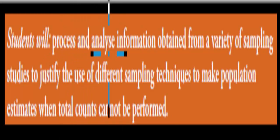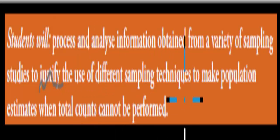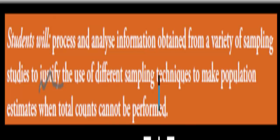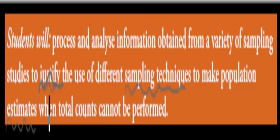The learning objective says: students will process and analyze information obtained from a variety of sampling studies to justify the use of different sampling techniques to make population estimates when total counts cannot be performed. So the key verb here is 'justify' — we need to say why we need different sampling techniques to be able to estimate how many of a certain population there are in a given area.